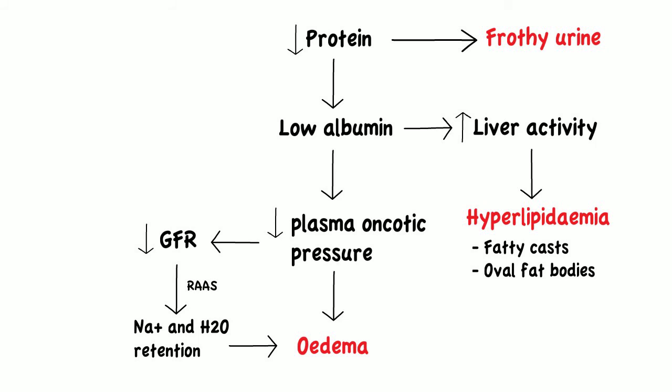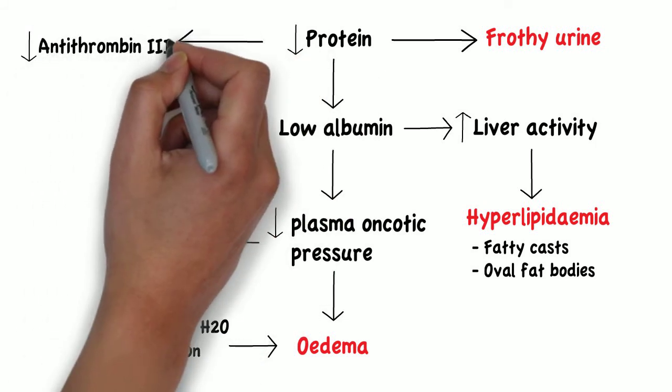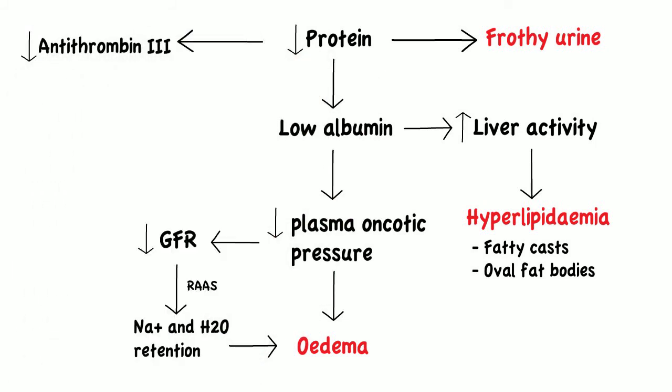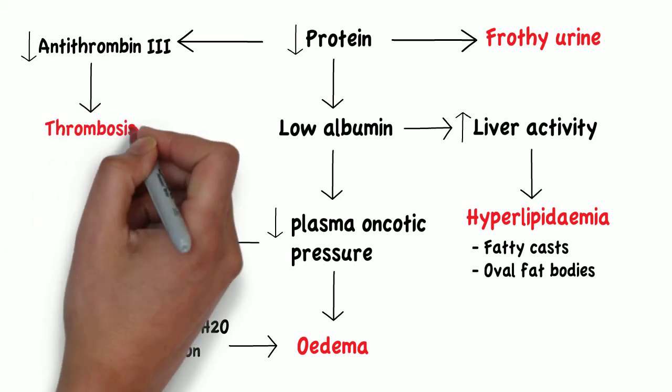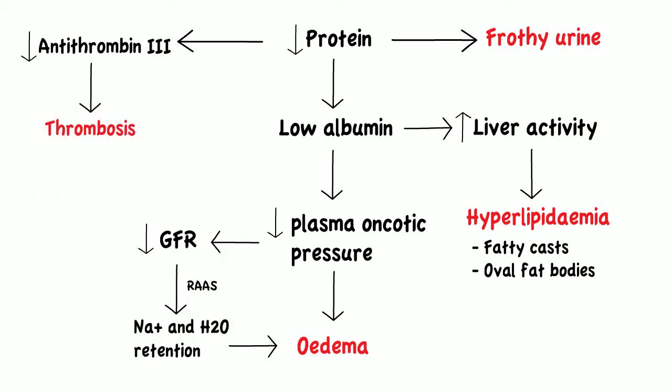In addition, in the process of losing proteins, you may lose a lot of antithrombin 3, which is a natural anticoagulant. Thus patients with nephrotic syndrome will be in a hypercoagulable state, which increases their risk of thrombosis.